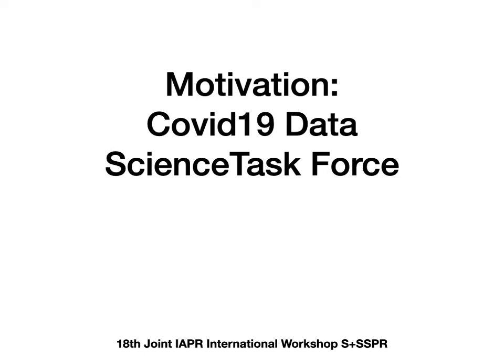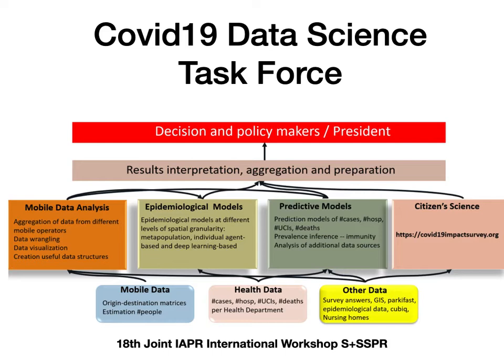The COVID-19 Data Science Task Force is a set of 20 scientists collaborating in different areas, like mobile data analysis, epidemiological models, predictive models, and citizen science. The idea is to gather information and make accurate predictions for the spread of COVID-19 here in Spain and in Valencia, and also to explore different methods of early warnings and extend the predictions not only to the cases but to how robust the resources of the system are.